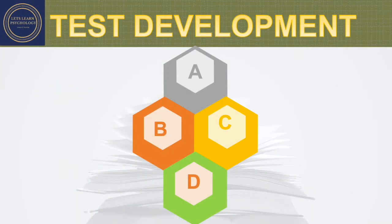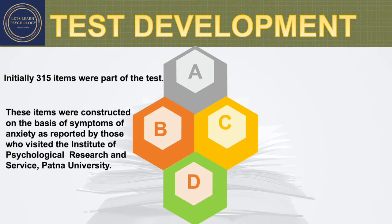How was this test developed? First and foremost, 315 items were developed as part of this test. These 315 items were constructed on the basis of symptoms of anxiety as reported by those who visited the Institute of Psychological Research and Surveys at Patna University — college students who came for counseling. The symptoms they presented for anxiety were turned into items for the test.